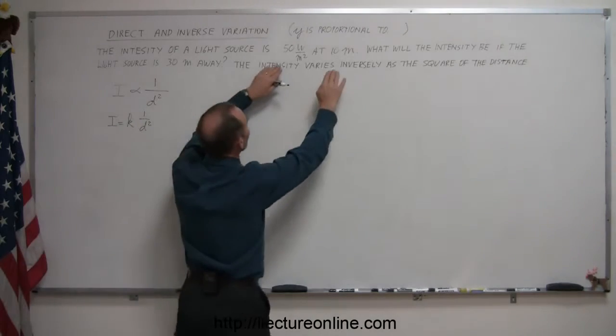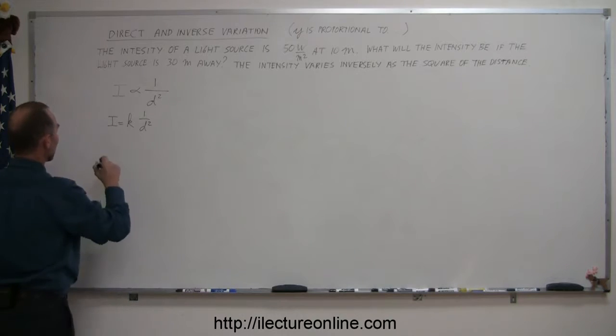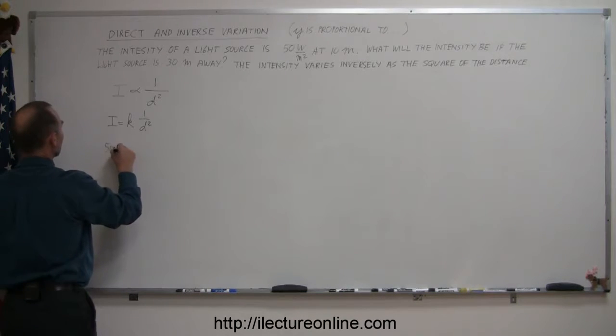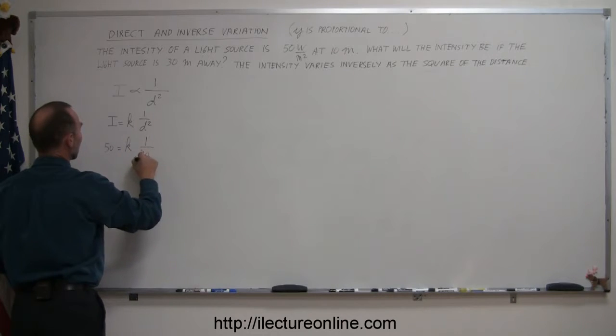Well, plug in the values that are given for I and d, and we can figure out what k is equal to. So when the intensity is 50 watts per square meter, then you have k times 1 over the distance, 10 meters squared.